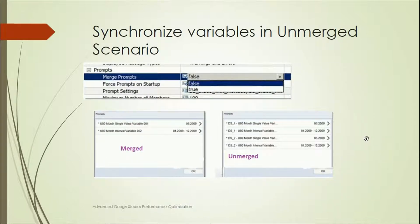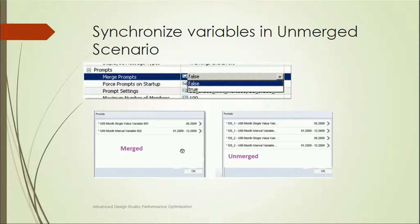Regarding synchronized variables in the unmerged scenario: if merge prompts is set to true, we cannot use parallel processing. Merge prompt combines prompts from two data sources into one; unmerged means DS1 and DS2 have separate prompts. If we are using merge prompts, we cannot use parallel processing, so we need to use unmerged prompts instead.